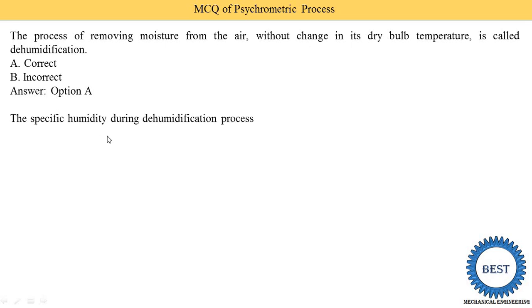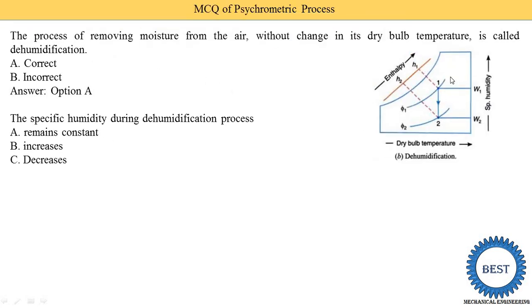The specific humidity during the dehumidification process: remains constant, increases, or decreases? From the diagram of dehumidification, the line moves in the downward direction, so specific humidity at the inlet is higher than at the outlet. Therefore specific humidity is decreased. Option C is the correct answer.